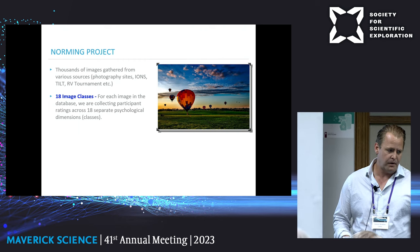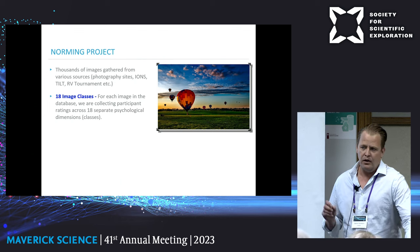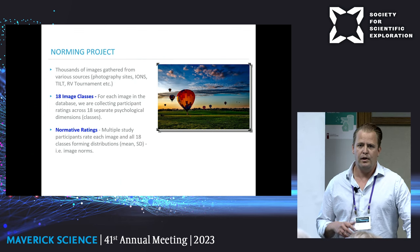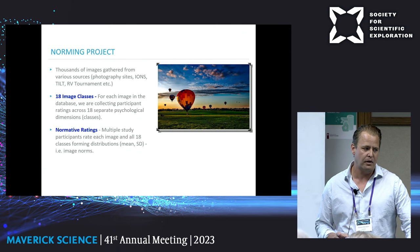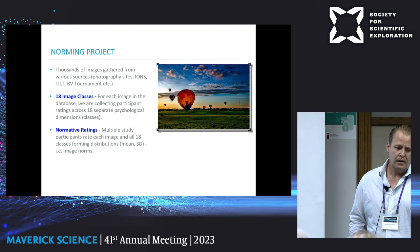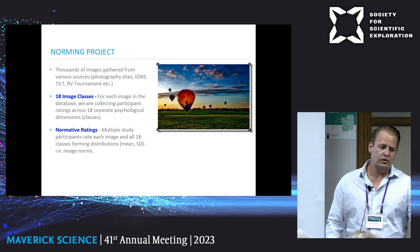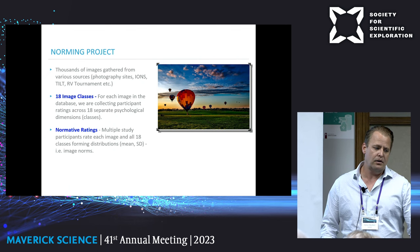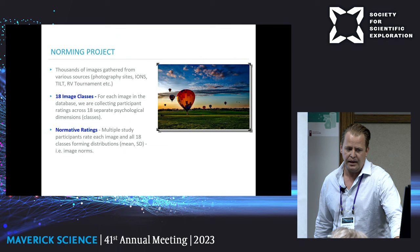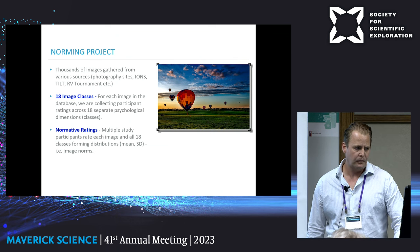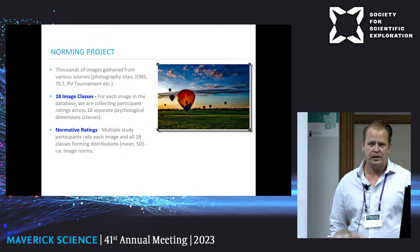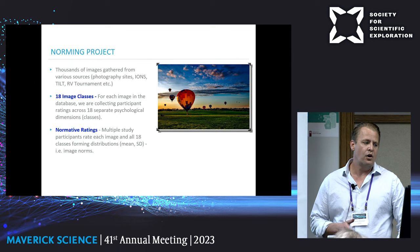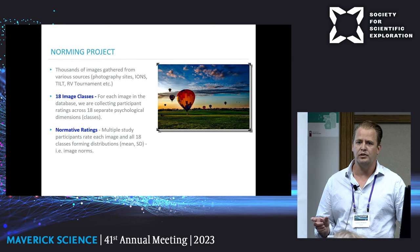All of the users' ratings form distributions with means, standard deviations, for each class across each image. These classes were informed by previous psychological research as well as input from work done by Ed May, Stanley Krippner, Stephen Schwartz, and others. Each class is divided into three separate orders, and any given participant will see one of these orders — receiving six questions for each image they see.